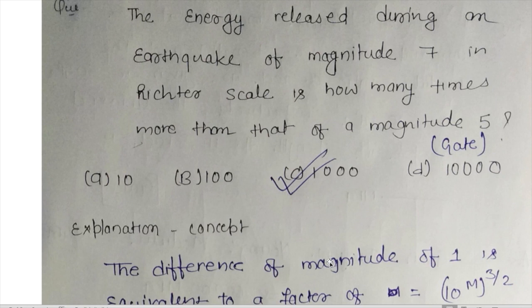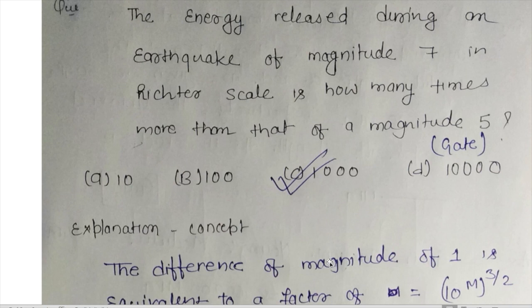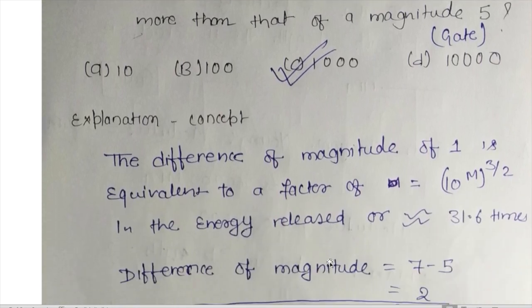Moving to the next question: the energy released during an earthquake of magnitude 7 on the Richter scale is how many times more than that of magnitude 5? This question is about energy, not amplitude. Don't confuse with amplitude — amplitude changes by 10 times for every unit increase on the Richter scale, while energy changes by approximately 32 times (more precisely 31.6) per unit.